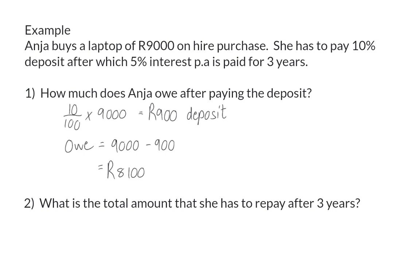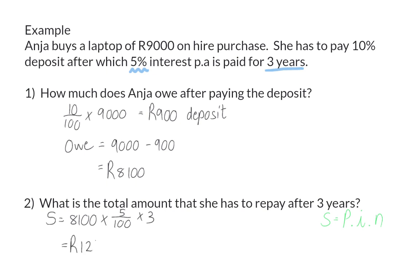Question two: what is the total amount that she has to repay after three years? She has to pay 5% interest for three years. To determine the total amount of simple interest, we take the amount she owes — which is now only 8,100 rand — and multiply this by the interest percentage of 5%, then multiply by the number of years.